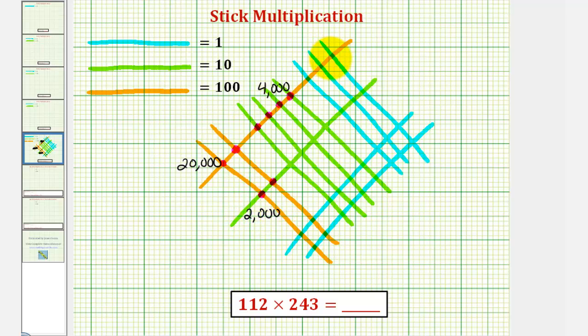Here we have intersection points of an orange and a blue, which represent 100 times 1, or 100. So here we have 100, 200, 300. Each intersection point of two greens represents 10 times 10, or also 100. So here we have 100, 200, 300, 400.